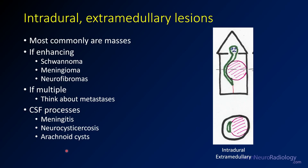Intradural extramedullary lesions are lesions outside the spinal cord. Here you see our drawing from earlier — the spinal cord is deflected to the side. On axial images, you see the spinal cord deflected to the side and the center of the lesion is outside the spinal cord. When you see this appearance, most commonly you're dealing with masses or tumors.